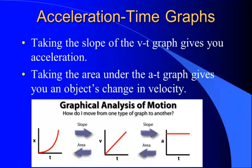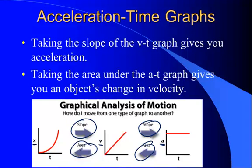If you take the slope of the VT graph you get acceleration, so you should be able to go the other way: from acceleration-time back to velocity-time. The area under the acceleration-time graph tells you the object's change in velocity. To summarize: going right — from position-time to velocity-time, or velocity-time to acceleration-time — you take the slope. Going the other way, to find change in velocity from acceleration-time, or change in position from velocity-time, you take the area.